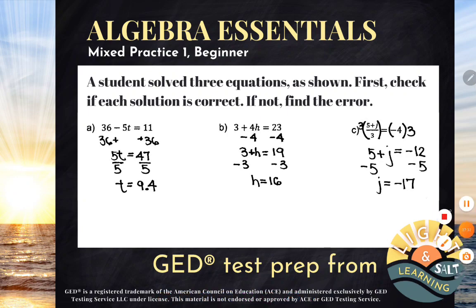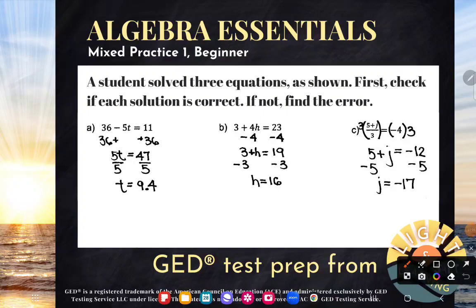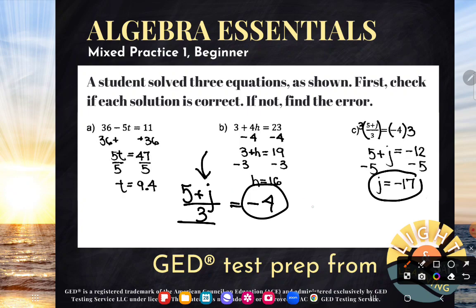Last example here. And again, can you guys go get your calculator? I'm sorry, I forgot mine. But plugging in negative numbers is not something I want you to worry about doing by hand. But I have to because I forgot my calculator. So let me bust out the original equation. 5 plus j over 3 equals negative 4. If I put in negative 17 for j, will I get negative 4 out of the left-hand side? Let's see. 5 plus negative 17 over 3.